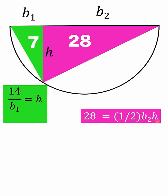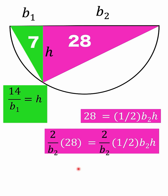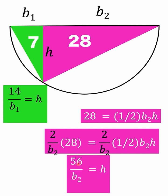Let's solve the pink triangle equation for h by multiplying both sides by 2 over b sub two. Two times one half is one, and b sub two divided by b sub two is one, so h = 56 / b₂. Notice that both expressions equal h, which means 14 / b₁ must equal 56 / b₂, because quantities equal to the same quantity are equal to each other.